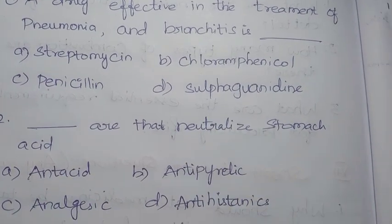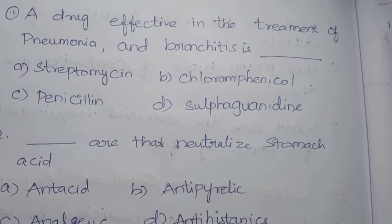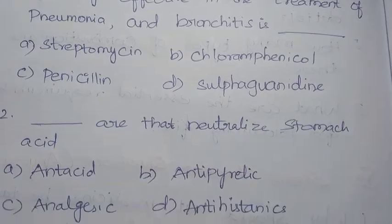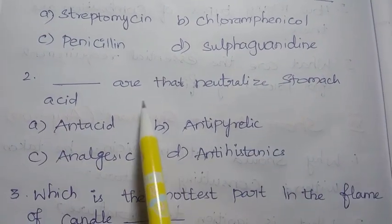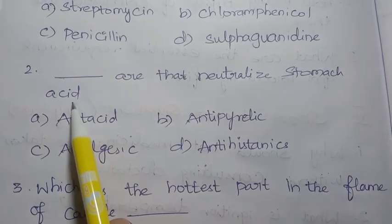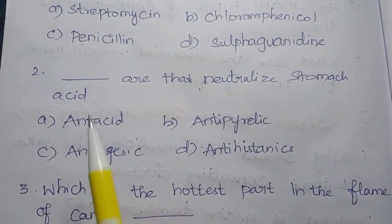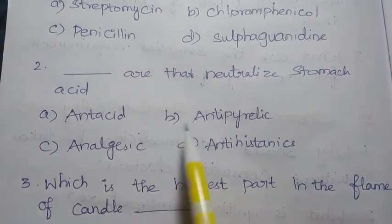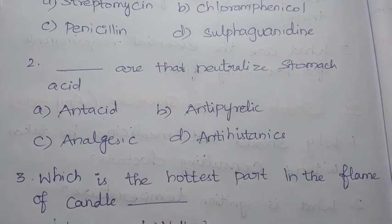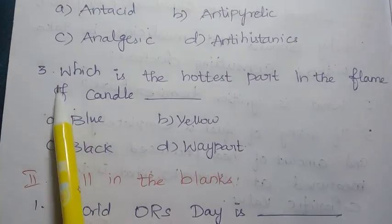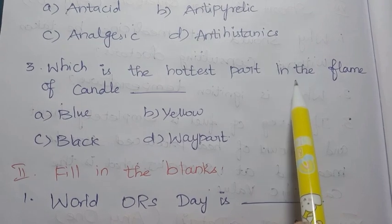In the options, find the drug used for pneumonia and bronchitis treatment. Second question: what neutralizes stomach acid? Options are antacid, antipyretic, analgesic, and antihistamines. Third question: which is the hottest part in the flame of a candle?